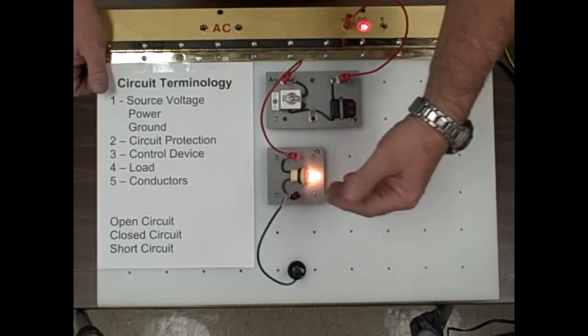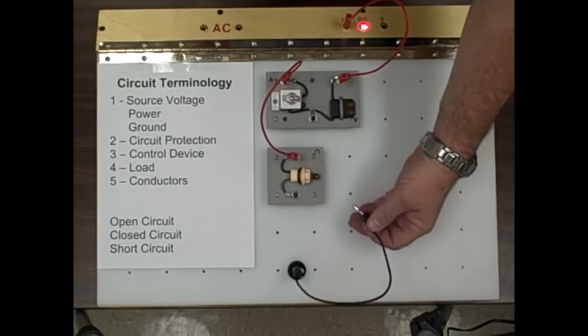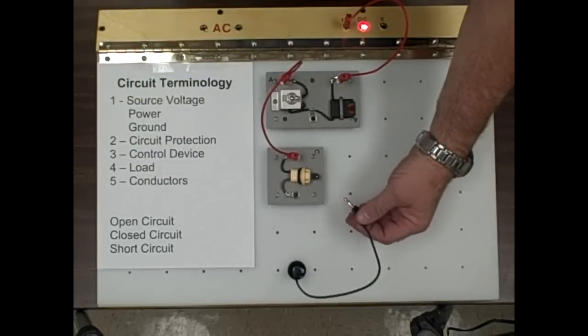Often we hear people say they have a short circuit. This seems to be a word that's thrown around a lot among consumers and often they don't know what they have. But a short circuit would be different than an open circuit. An open circuit remember opens up the circuit so the current cannot flow and all the current stops everywhere in the circuit.